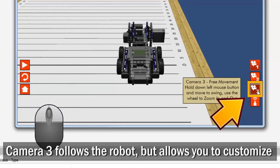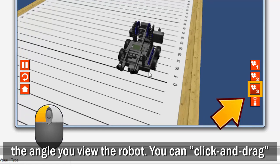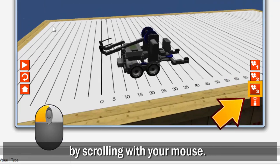Camera 3 follows the robot, but allows you to customize the angle you view the robot. You can click and drag in the world to rotate the view, and zoom in and out by scrolling with your mouse.